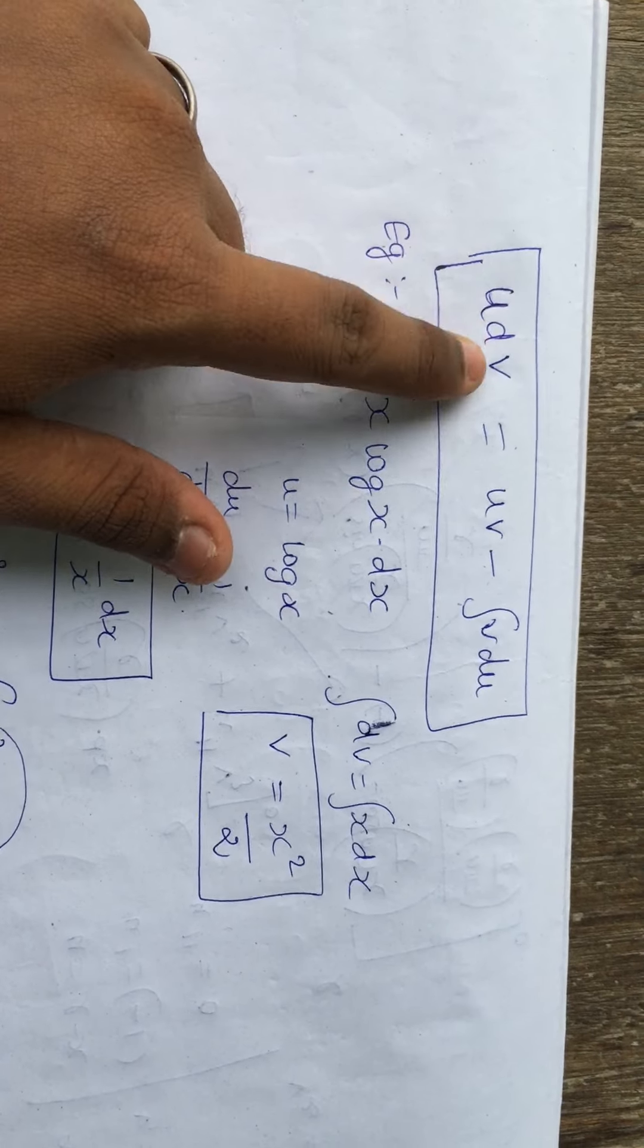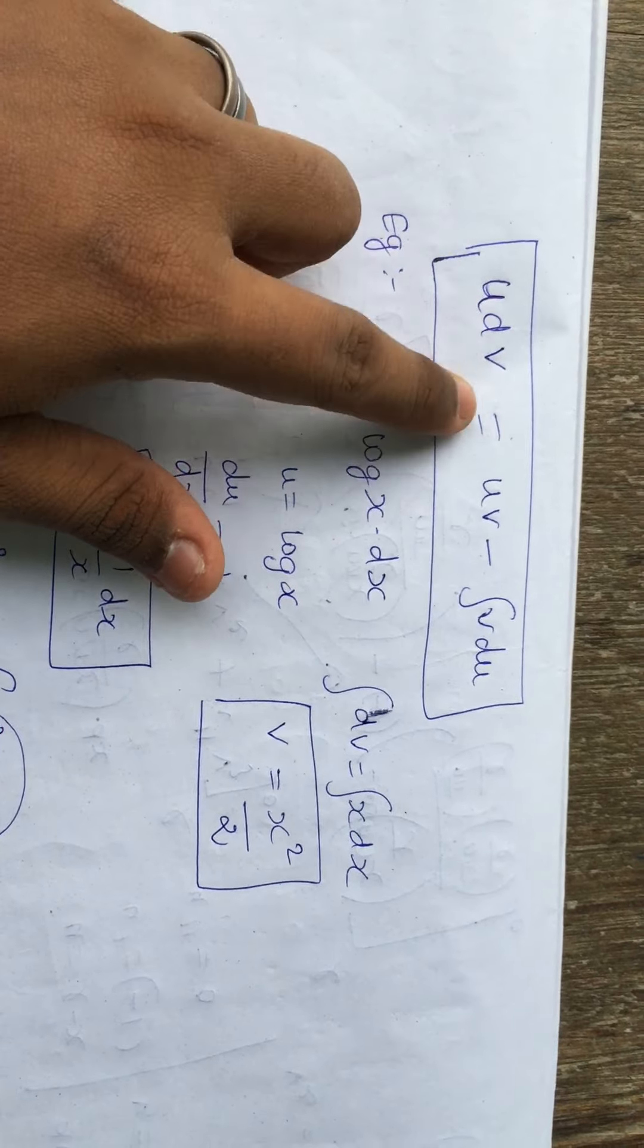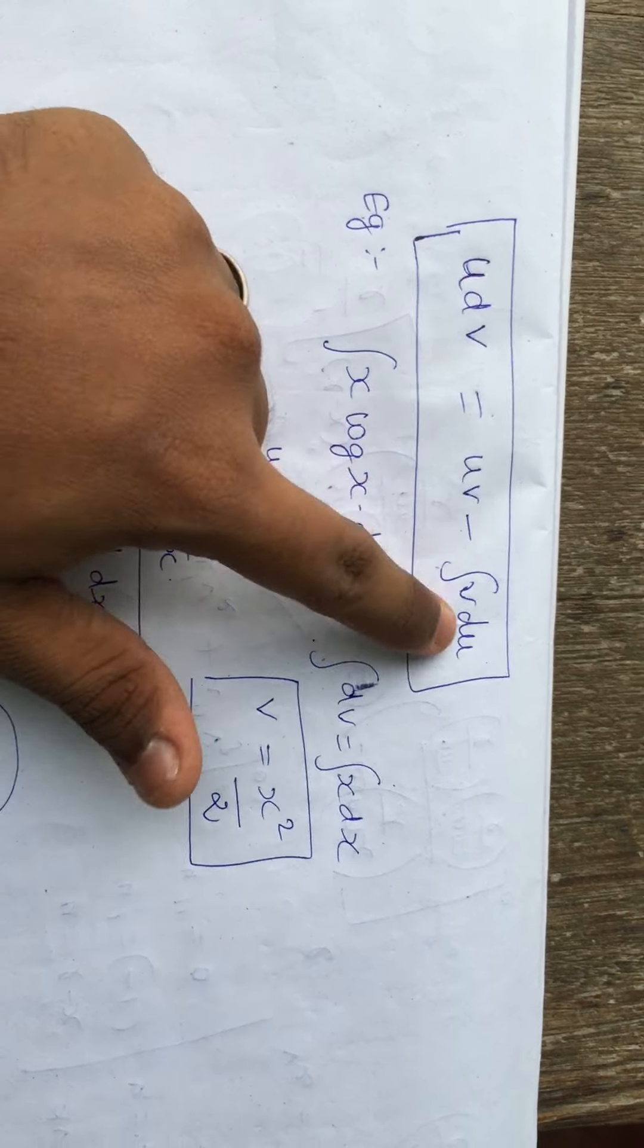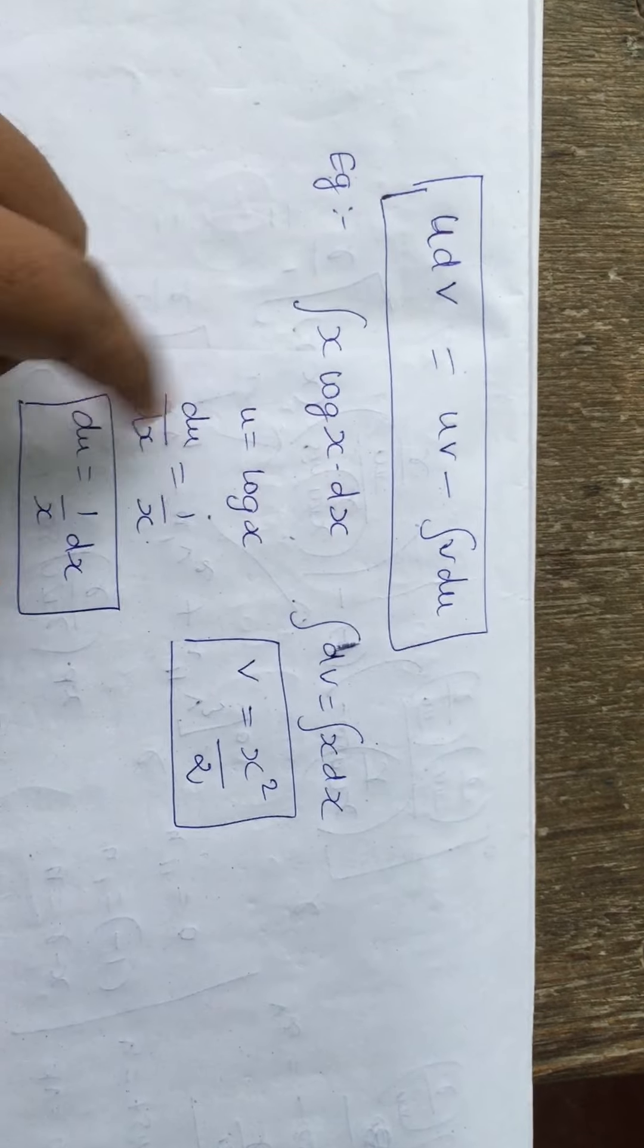Hi friends, in this video session we are going to discuss a basic kind of formula. The integration by parts formula: u dv is equal to u v minus integral v du.